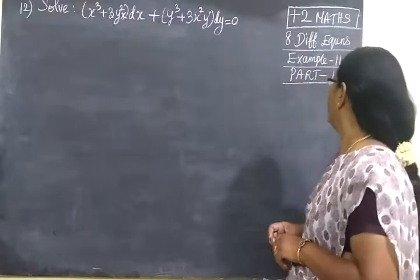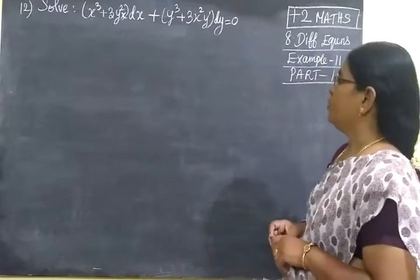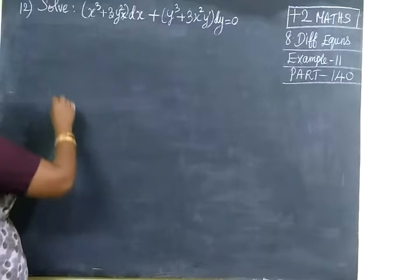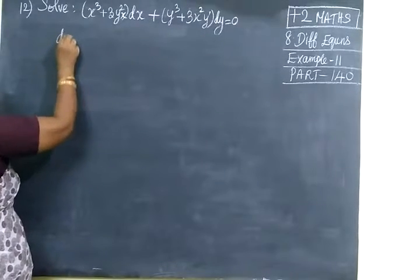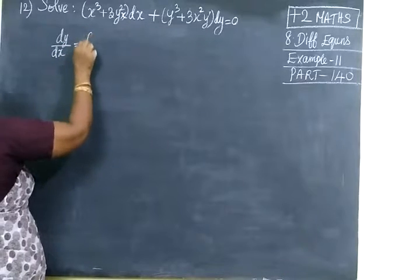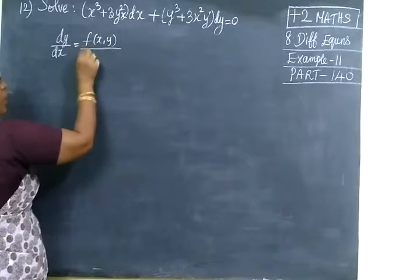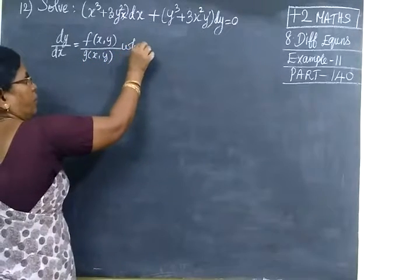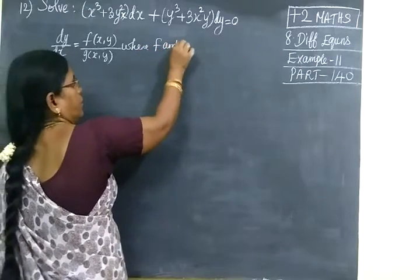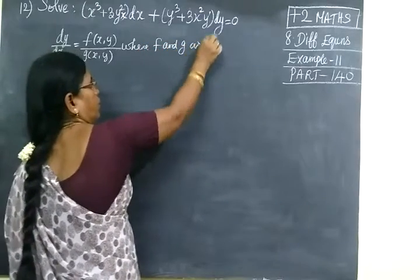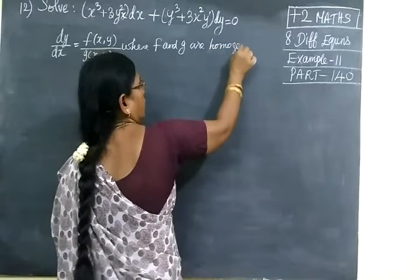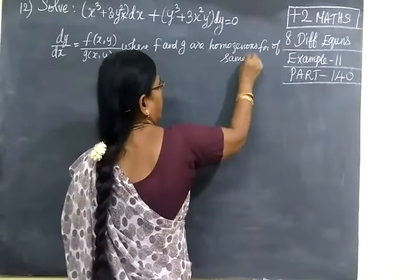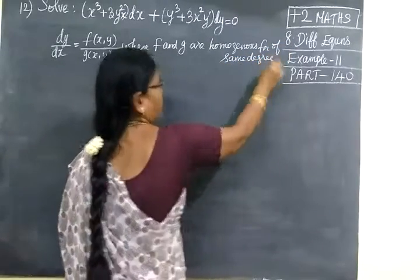Now we do part 140, exam 11. It is given. For this we should write in the form dy by dx equal to some f of x, y and z of x, y, where f and z are homogeneous functions of the same degree. These are homogeneous functions of the same degree.